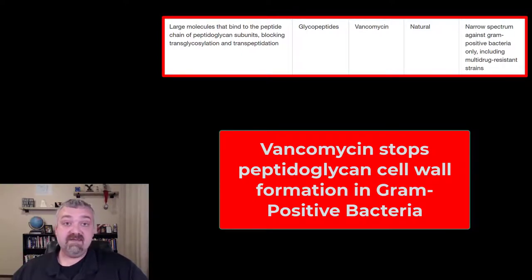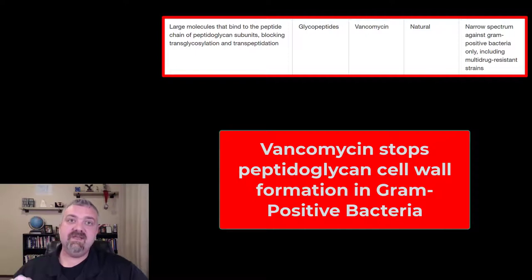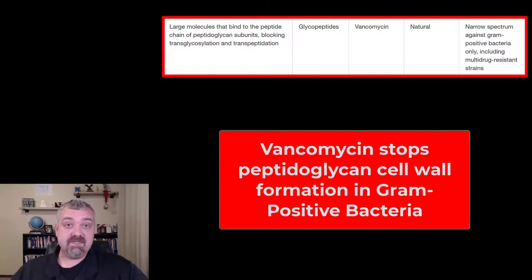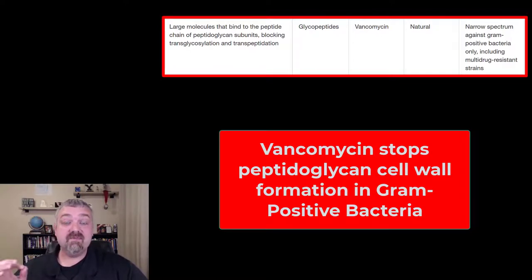Vancomycin is only effective against gram-positives. It actually can't penetrate the outer membrane of gram-negative bacteria. So this is a narrow spectrum antibiotic, only going to be used against gram-positives. Because it is effective against some strains of MRSA, that's what it was primarily used for — as a last line of defense against MRSA, methicillin-resistant Staphylococcus aureus.